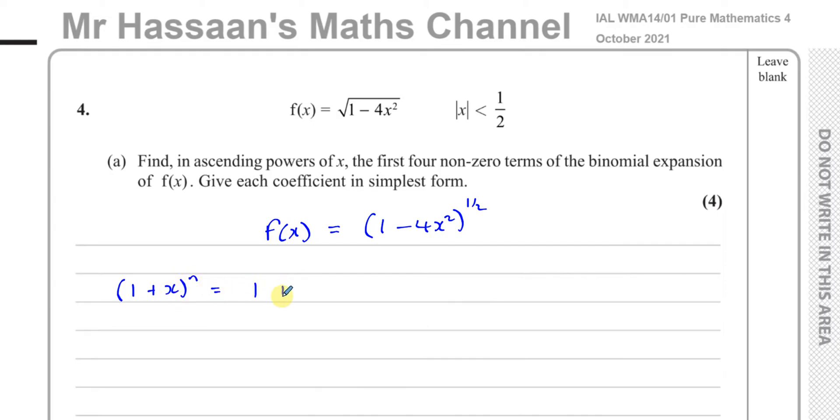The formula that we use is in the formula book, and it's when you have something in the form 1 plus something to the power of n. The formula goes like this: 1 plus nx plus n times n minus 1 over 2 factorial times x squared, and it follows that same pattern, n times n minus 1 times n minus 2 over 3 factorial times x cubed, and so on. The n here is the power, and the x in the formula is whatever is in this place here.